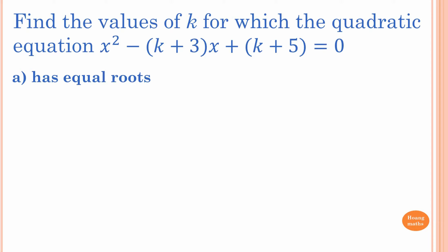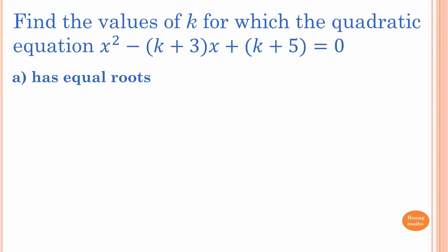Find the values of k for which the quadratic equation x² minus (k+3)x + (k+5) = 0 has equal roots. Equal roots means the graph just touches the x-axis, so the discriminant must equal 0.